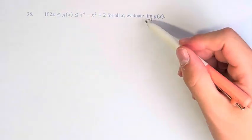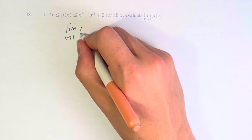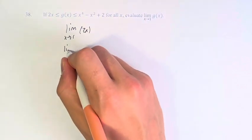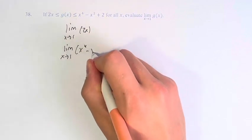So, we have to evaluate the limit as x approaches 1 of 2x and the limit as x approaches 1 of x to the fourth minus x squared plus 2.